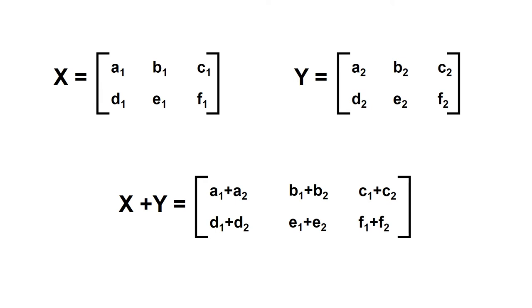Now, two matrices are taken. Matrix X has elements a1, b1, c1, d1, e1, and f1. Matrix Y has elements a2, b2, c2, d2, e2, and f2. So the addition X + Y equals the matrix with elements a1+a2, b1+b2, c1+c2, d1+d2, e1+e2, and f1+f2. From this, we can understand that the addition of two or more matrices itself follows the matrix format.